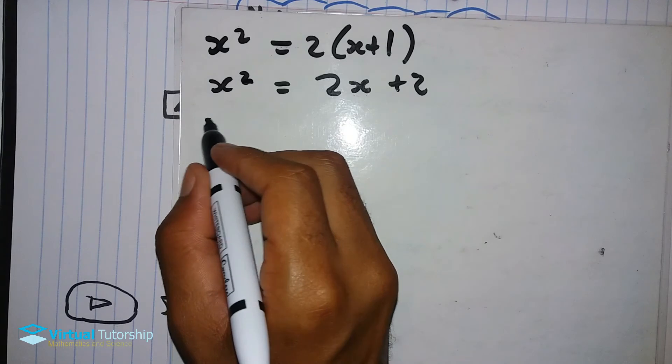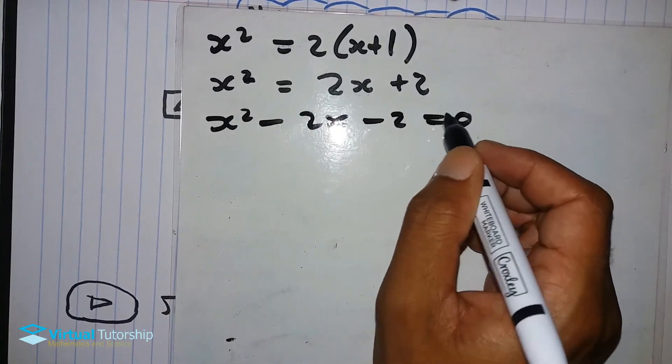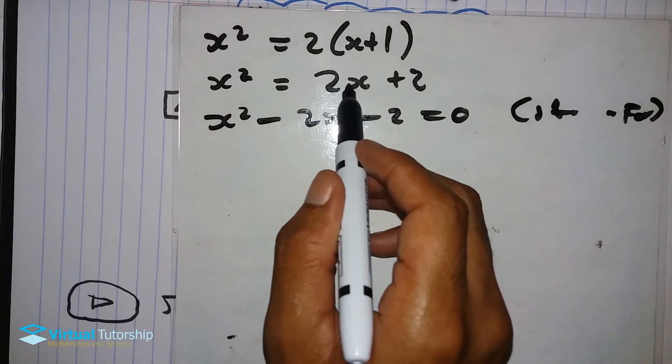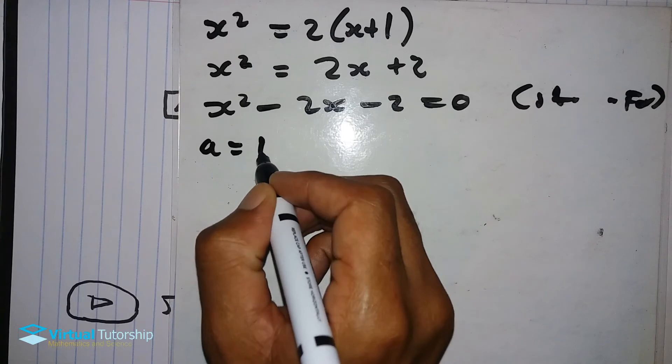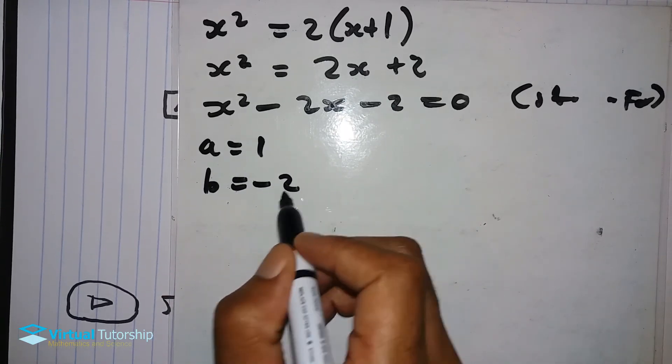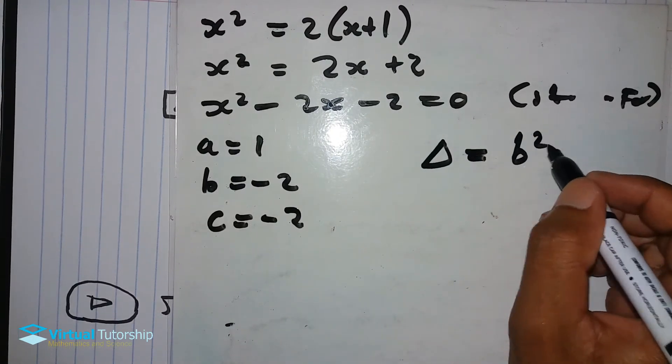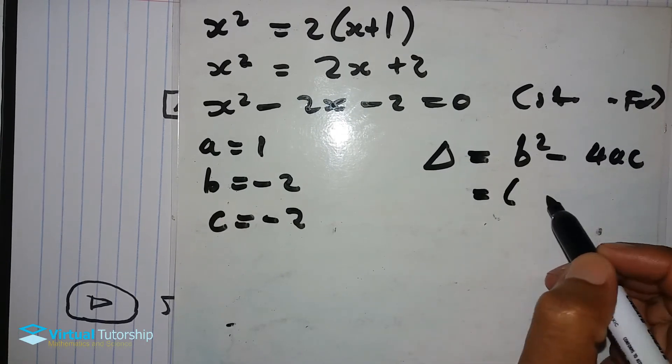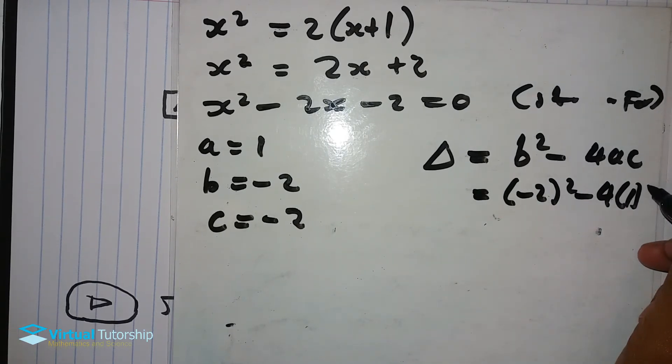In this case, x squared minus 2x minus 2 is equal to 0. This is in standard form. You need to transpose the 2x and the 2. So a is plus 1, b is minus 2, c is equal to minus 2. The delta is b squared minus 4ac equal to: b is minus 2 squared minus 4, so a is 1, and then times minus 2.